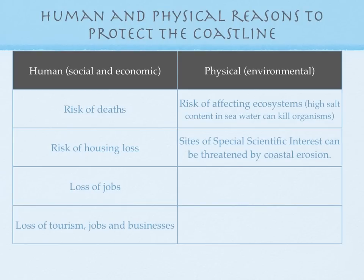First off, human and physical reasons to protect the coastlines. At some places there are more human reasons and at other places there are more physical reasons — it depends on where you're looking. Under human, these are what we would class as social and economic reasons. Social reasons being things that affect people, and economic being monetary reasons. A social reason: a risk of death or destruction of lives. The risk of housing loss, loss of jobs, loss of tourism and businesses — jobs, tourism, and businesses being economic.